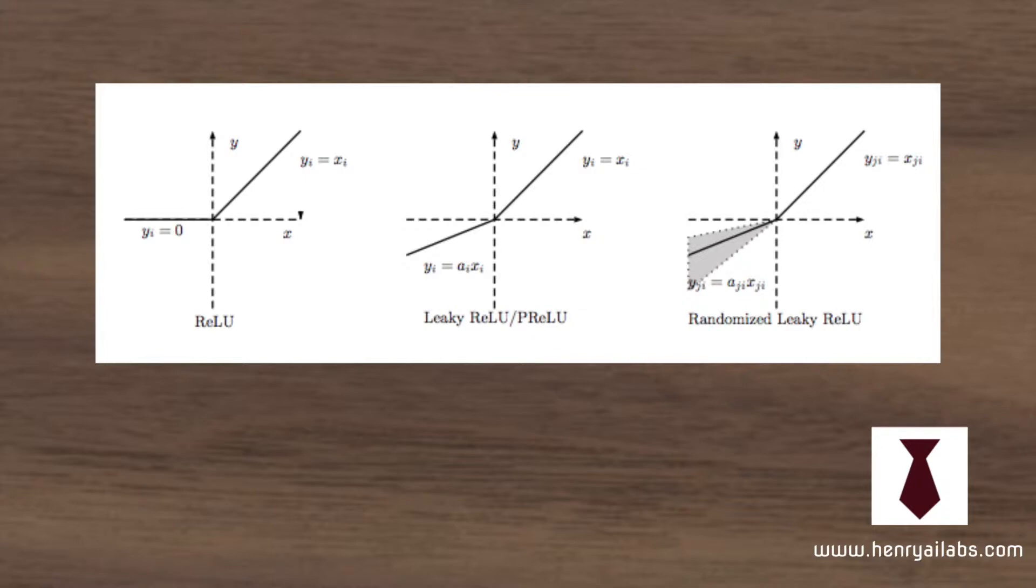Extending the ReLU is the leaky ReLU, which parameterizes the negative end with some slope parameter such that it doesn't set it right to 0, but it has some value, not necessarily just the absolute value of the negative component.